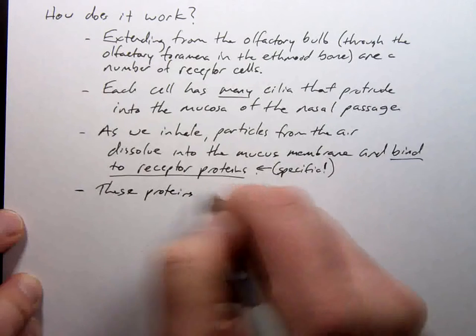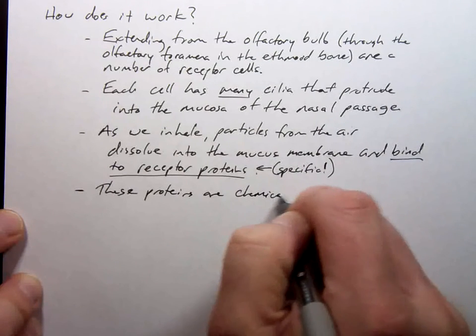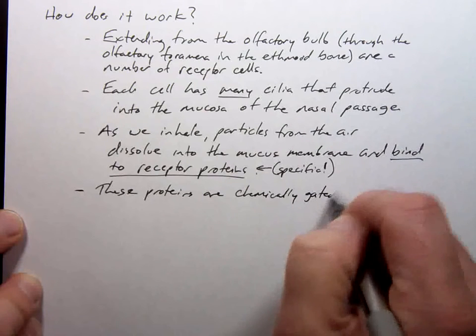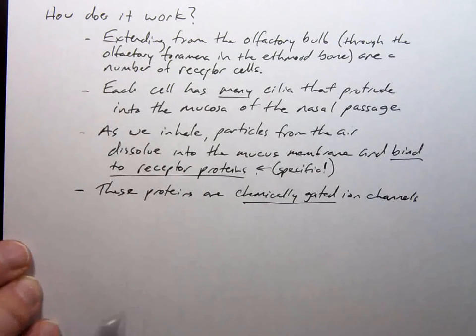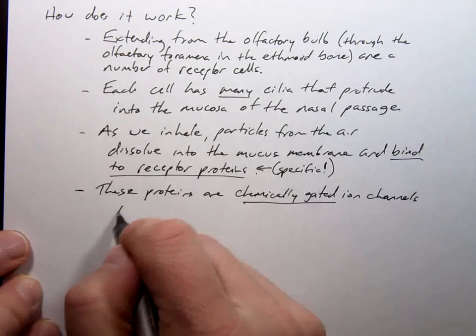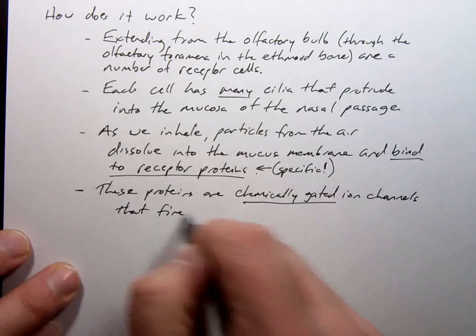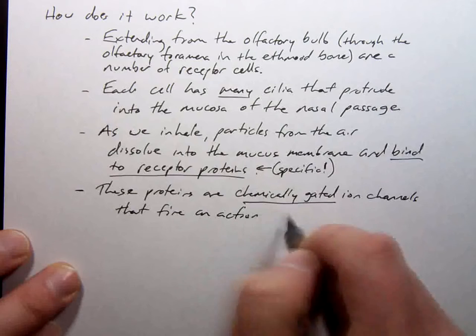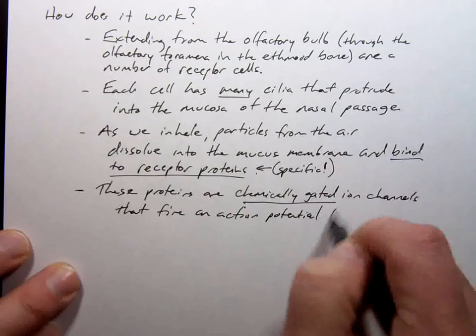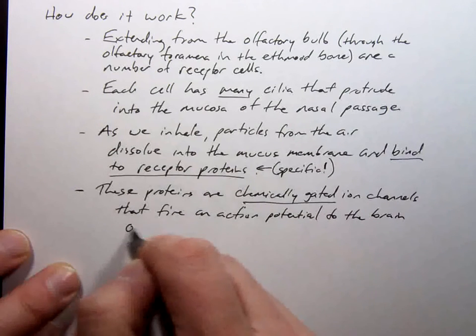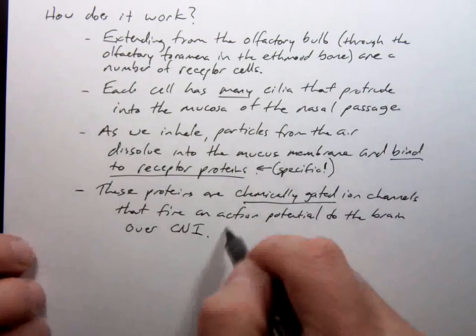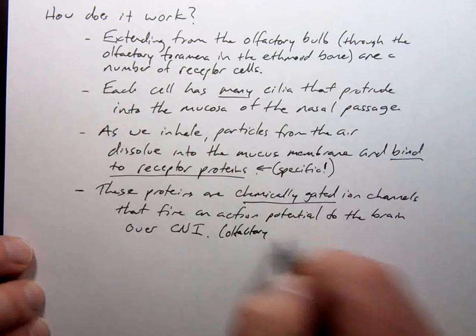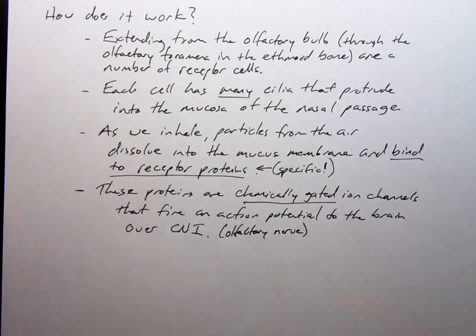I'm bringing it back to chapter one. These proteins are chemically gated ion channels that fire an action potential to the brain over cranial nerve number one, the olfactory nerve. That's basically how it works.